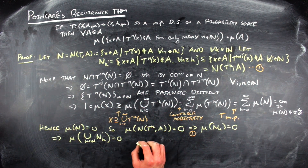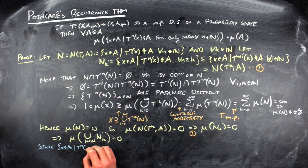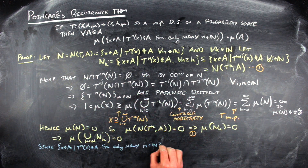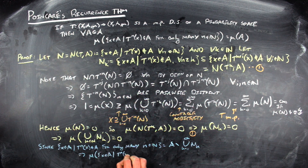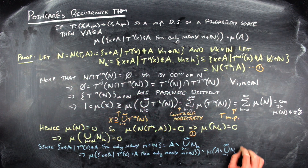Since the measure of N(T^k, A) is also zero for each k, the measure of each N_k is zero. A countable union of measure-zero sets is measure zero, so the union of all N_k has measure zero. The complement of that union is exactly the set of all x's in A that return to A infinitely often. By the excision property, its measure equals the measure of A minus zero, which is the measure of A — finishing the proof of Poincaré's recurrence theorem.